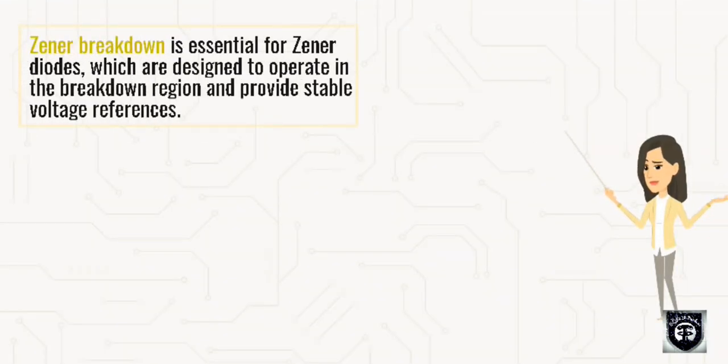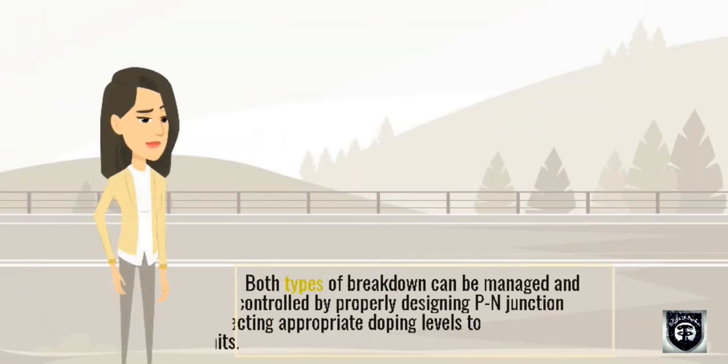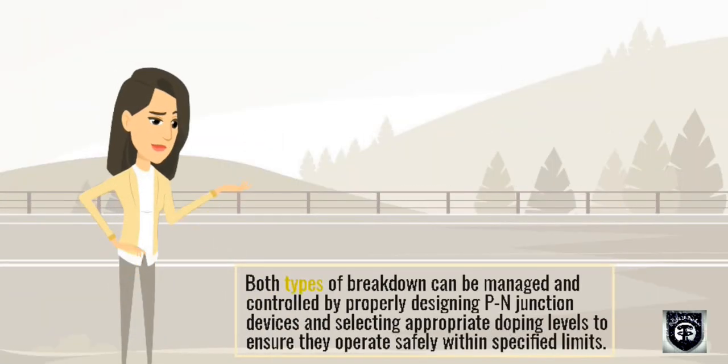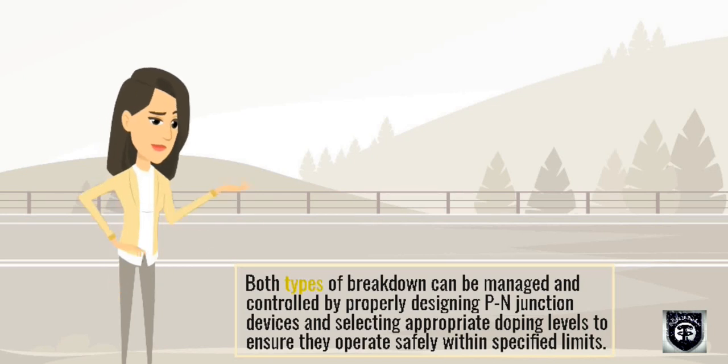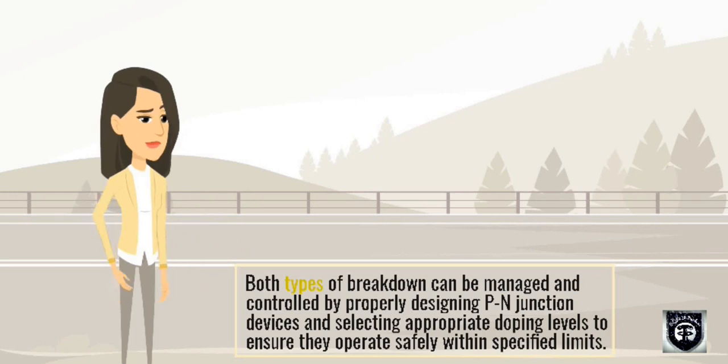Zener breakdown is essential for zener diodes, which are designed to operate in the breakdown region and provide stable voltage references. Both types of breakdown can be managed and controlled by properly designing P-N junction devices and selecting appropriate doping levels to ensure they operate safely within specified limits.